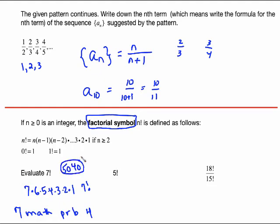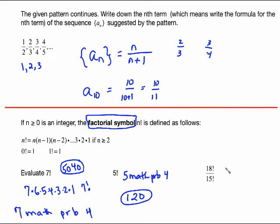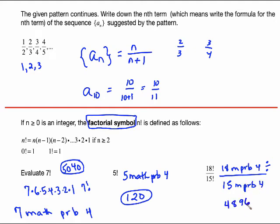5 factorial can be computed by hand or by calculator using Math, PRB, fourth entry, and equals 120. Even for a fraction like 18 factorial divided by 15 factorial, you can do 18 Math PRB fourth entry divided by 15 Math PRB fourth entry, and that works out to be 4,896. Two important things: 0 factorial is defined to be 1 — type it in your calculator if you want to verify — it makes no intuitive sense from the definition, but 0 factorial equals 1.